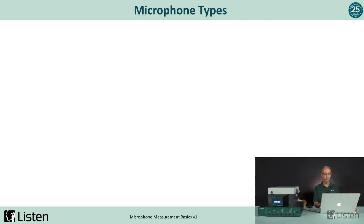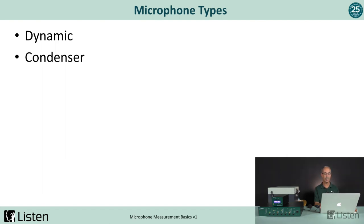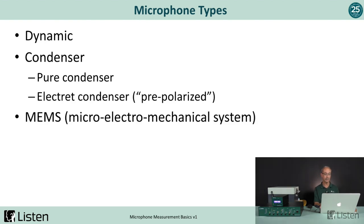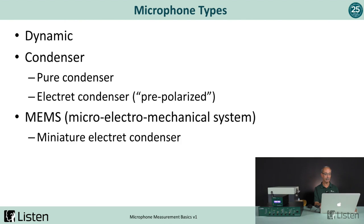There are three main microphone types we're going to talk about today. There's the dynamic microphone, the condenser microphone — which includes the pure condenser as well as the electret condenser or pre-polarized — and lastly the MEMS microphone, the micro-electromechanical system microphone. MEMS microphones are essentially very small miniature electret condenser microphones that have associated electronics and perhaps analog-to-digital converters, and they come in digital and analog types.